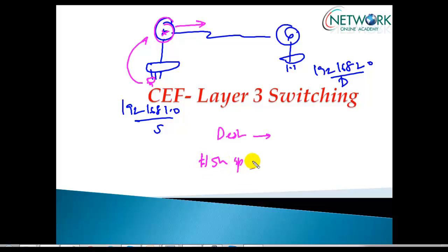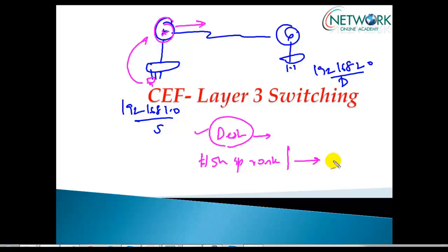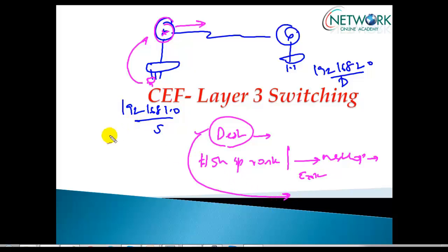The router's job is to find the destination network ID. It verifies the routing table using 'show ip route' and ensures the destination network ID is present. Based on that, it determines the next-hop address and forwards the packet via a specific exit interface. This is the traditional Layer 3 lookup which generally happens in routers during any routing process.